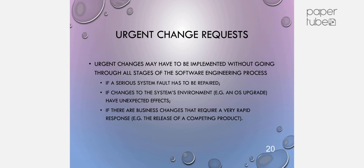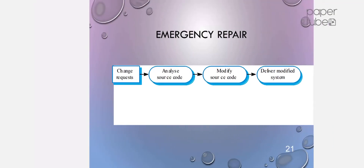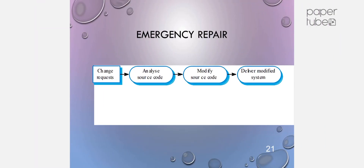If there are business changes that require a very rapid response, we modify the source code and deliver a modified system directly — that is emergency repair. This rapid change approach can bypass normal maintenance patterns when urgency demands it.